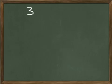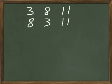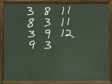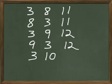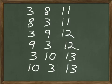Let's continue on our next board. 3 and 8 are 11. 8 and 3 are 11. 3 and 9 are 12. 9 and 3 are 12. 3 and 10 are 13. 10 and 3 are 13. Okay, that will warm us up a little bit for the word problems, which we'll do next.